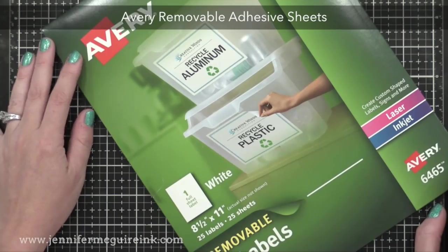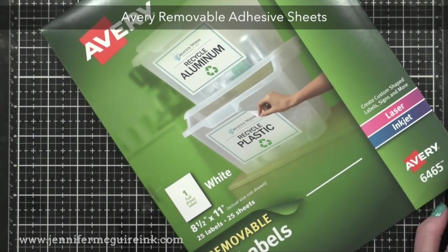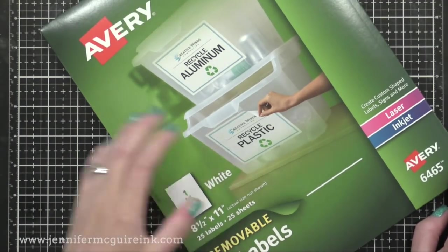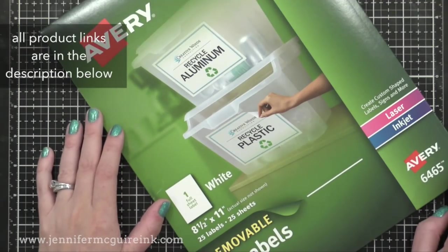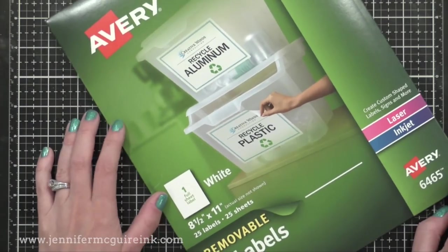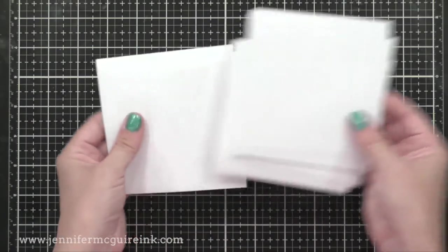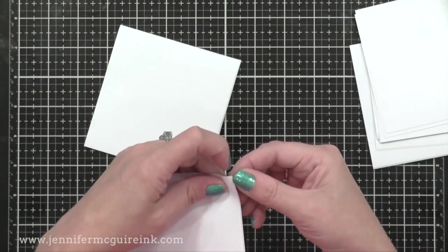These are eight-and-a-half-by-eleven removable labels that are perfect for masking, has the right amount of stick to be able to put it on your project and remove it easily. So I will cut these down into smaller workable pieces, but this is what I've been reaching for most often for masking, but you could use any masking paper or even Post-It notes. So I cut a bunch of those sheets down into four-by-four squares. You could do whatever size you want.